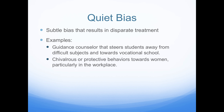But there are other kinds of discrimination that are less overt. Quiet bias refers to a subtle bias that results in disparate treatment — things like a guidance counselor that steers students away from difficult subjects and towards vocational school.